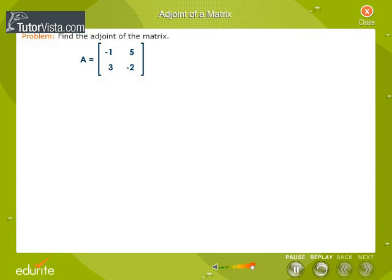Find the adjoint of the matrix [-1, 5; 3, -2]. To find adj A, we need to first find the cofactors of -1, 5, 3, -2.